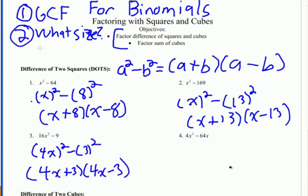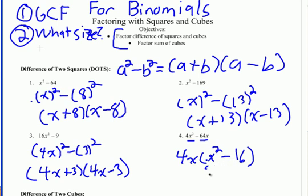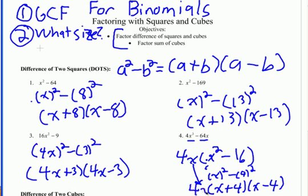You can see how quick these can go when you get the hang of them. Number four — is there a GCF? Yes, there is on this one. 4x goes into both terms, so we'll pull out 4x. We divide each term by 4x and we get x squared minus 16. Now it's a binomial — is it a difference of two squares? Definitely a difference, and they're both perfect squares: x squared minus 4 squared gives us (x plus 4) times (x minus 4). Don't forget we pulled out a GCF, so we write it on the outside.